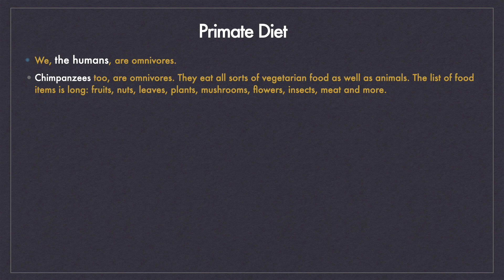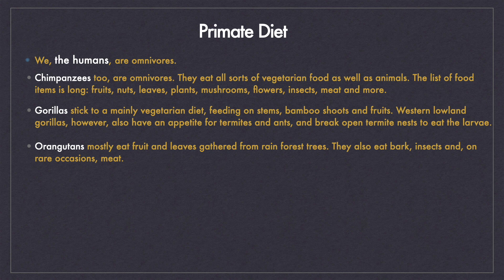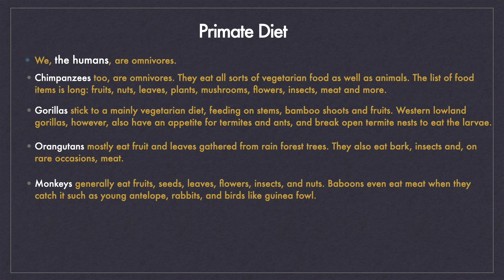What do the primates eat? We humans are omnivores. Barring some communities that do not eat meat due to their cultural practices, humans eat both plant-based food and animal meat. Chimpanzees, being our closest relatives, are also omnivores — they eat fruits, nuts, leaves, flowers, insects, and meat. Gorilla diet is mainly vegetarian but they also eat termites and ants. Orangutans are mostly plant eaters but also eat insects and on rare occasions meat. Monkeys eat fruits, seeds, leaves, flowers, insects, and nuts.